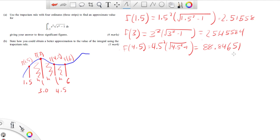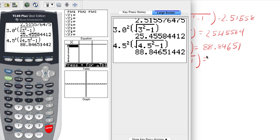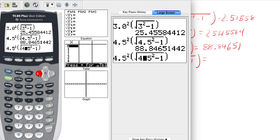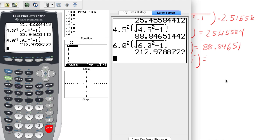Finally, the last one, f of 6.0. So we're going to have 6.0 squared, square root of 6.0 squared minus 1. And again, I'm just going to change the input here. 6.0. All right, 212.97887.